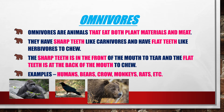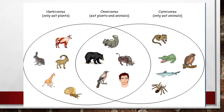Examples of omnivores: humans, bears, crow, monkeys, rats, etc. Now let's see a brief summary — herbivores only eat plants, omnivores eat plants and animals, carnivores only eat animals. Now let's see what scavengers are.